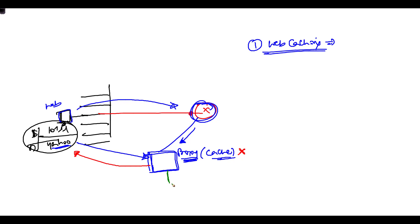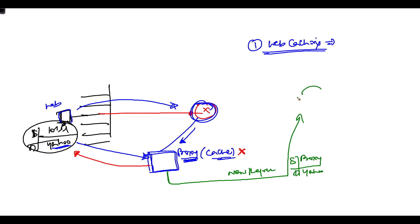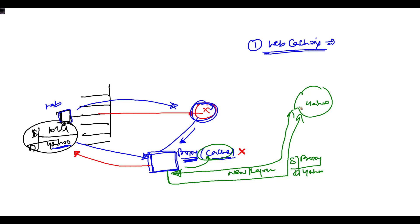A new request is initiated by the proxy, where the source address is the proxy and the destination is the Yahoo server. Yahoo returns the webpage to the proxy, and the proxy stores it in the cache. That way, if any other user tries to access the same page, it doesn't need to route over the internet — it is sent back directly to that individual user from the proxy.